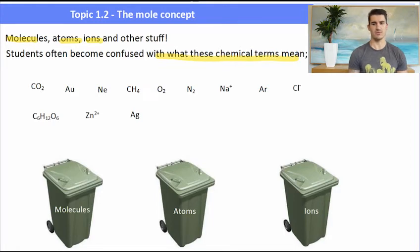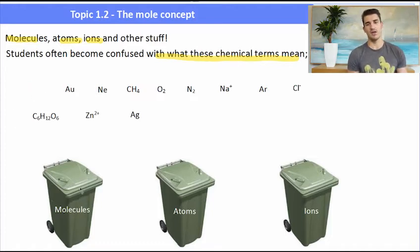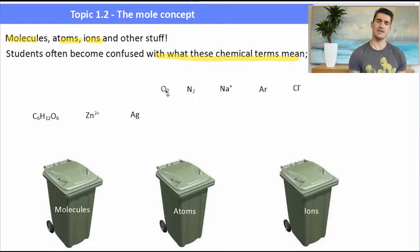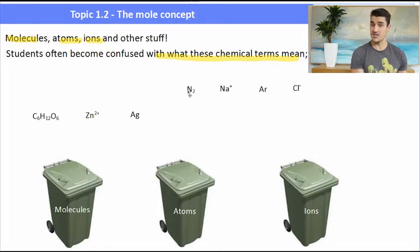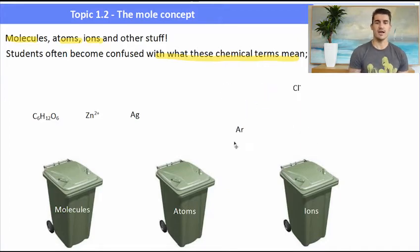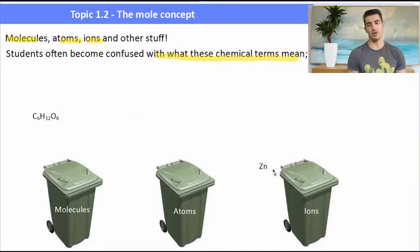Students sometimes get confused with a few of these, so here I've got three bins and we're going to put the symbols into the right spot. Neon consists of atoms. CH₄ consists of molecules. Oxygen is an element, but it goes in the molecules bin — it's an O₂ molecule. N₂ is the same, it's an N₂ molecule. Na⁺ is a sodium ion. Ar is an atom. And then we've got silver atoms, zinc ions, and sugar molecules — so we can describe those as molecules, atoms, or ions.